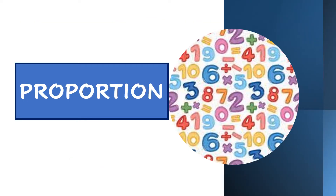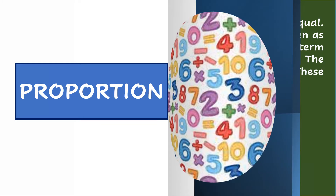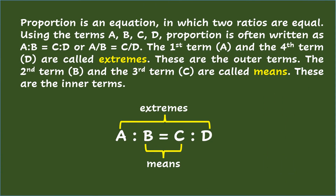Proportion is an equation in which two ratios are equal. Using the terms A, B, C, and D, proportion is often written as A is to B equals C is to D, or A over B equals C over D.